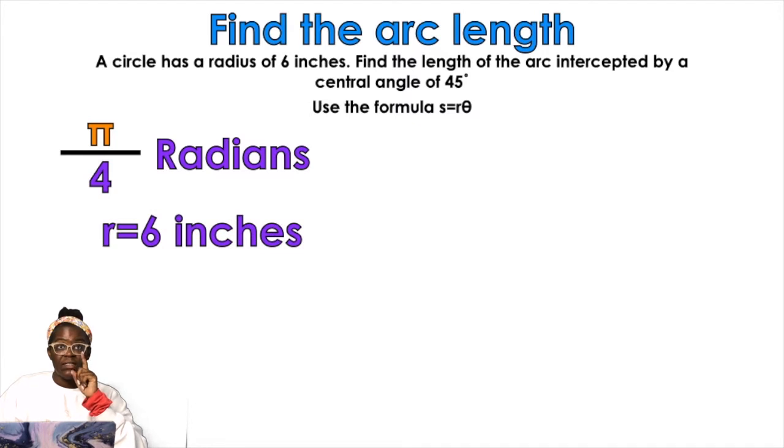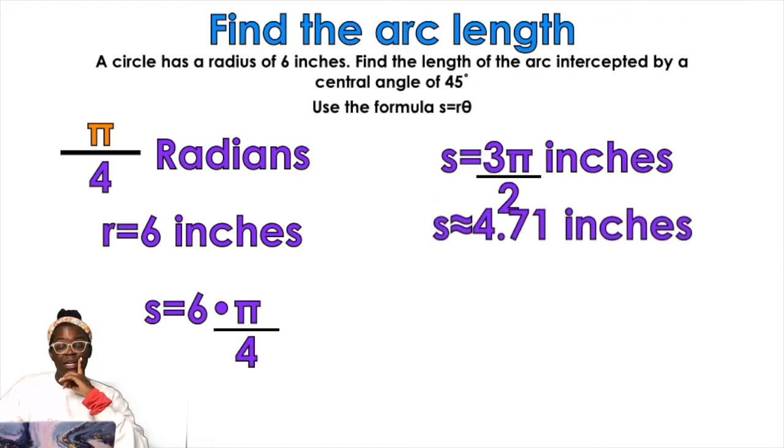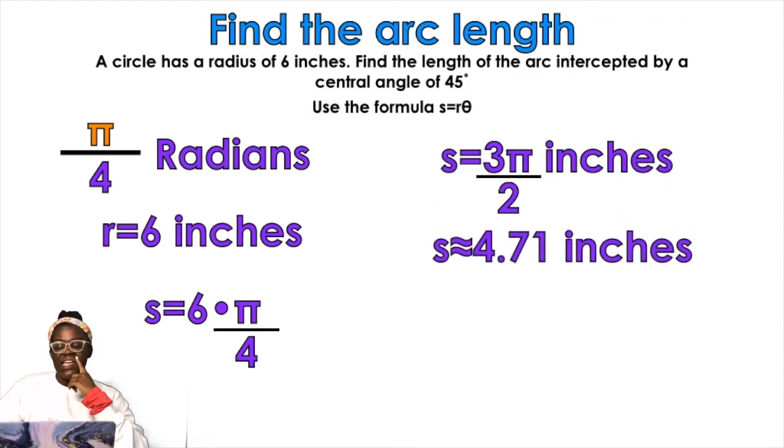And our radius is 6. So 6 times pi over 4 is going to simplify to be 3 pi over 2, because 6 over 4 is 3 over 2. Leave that pi alone. If I pop that into the calculator, 3 times pi divide that by 2, I'm going to get approximately 4.71 inches. It really does not get harder than that. That's it.